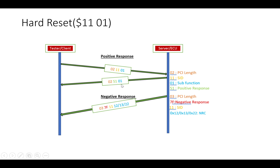For a negative response to hard reset, the format is: 0x03 (PCI length), 0x7F (negative response ID), 0x11 (service ID), followed by the NRC — 0x12 for sub-function not supported, 0x13 for incorrect length or invalid format, 0x22 for conditions not correct, or 0x33 for security access denied.